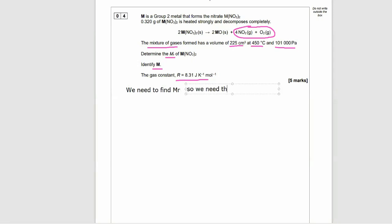We need to find the MR, so we need to use the ideal gas equation. How do we know that? We've got volume, temperature and pressure, so that's a pretty big clue. We can find the MR from the equation mass over MR equals moles. We can use PV equals nRT to find the moles.